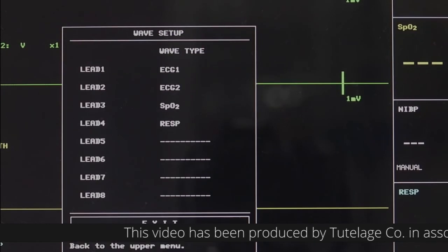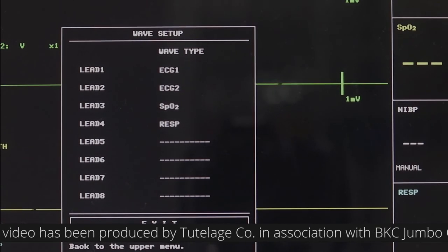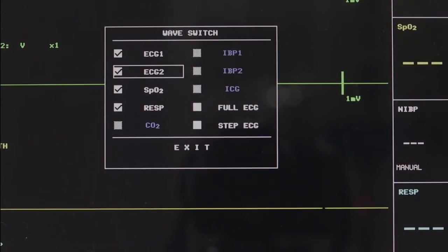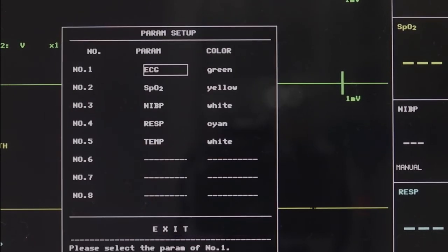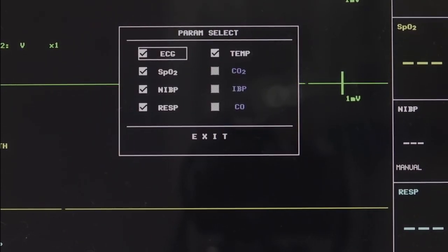Wave Setup shows 8 leads. The waveform position can be changed. Wave Select lets you select the waveforms displayed. Parameter Setup lets you change the position of the parameters and display them in different colors. Parameter Select lets you choose the parameters to be monitored. This can avoid the interference from the parameters that do not need attention.